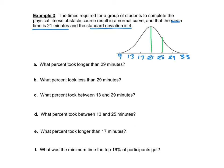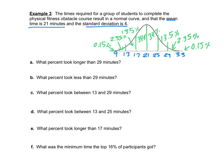What percent took longer than 29 minutes? Find 29 on the curve and add the sections to the right: 2.35% plus 0.15% equals 2.5%. So 2.5% of students took longer than 29 minutes.